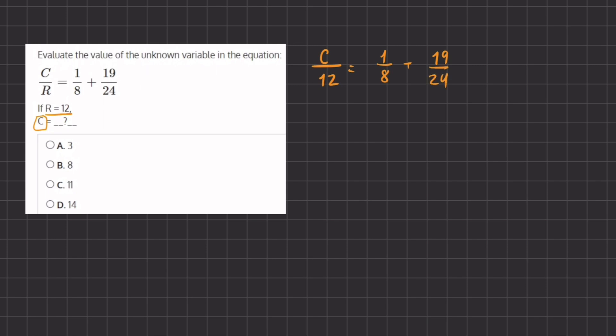So now before we multiply this 12 on both sides to isolate the c, let's add what we have on the right hand side. So in order to do so we want to add these two fractions together and we need to find the least common denominator and in this case the LCD is going to be 24.